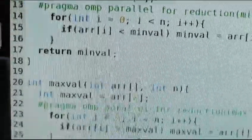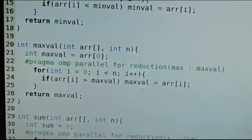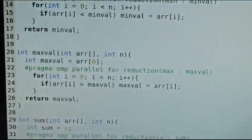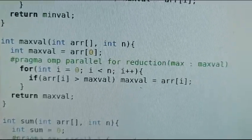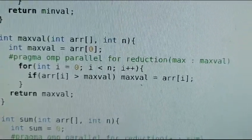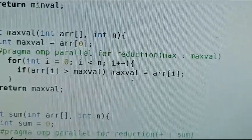Next is function maxval to find out the maximum element. The first argument takes the array and n as the size of array. Then maxval is assigned to first value from array, arr[0].